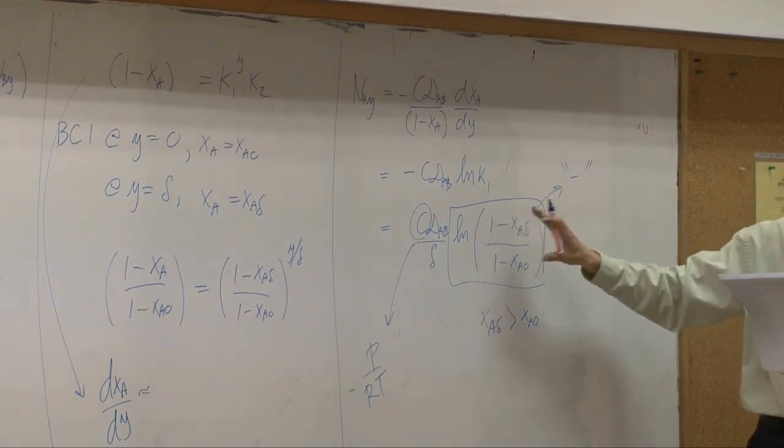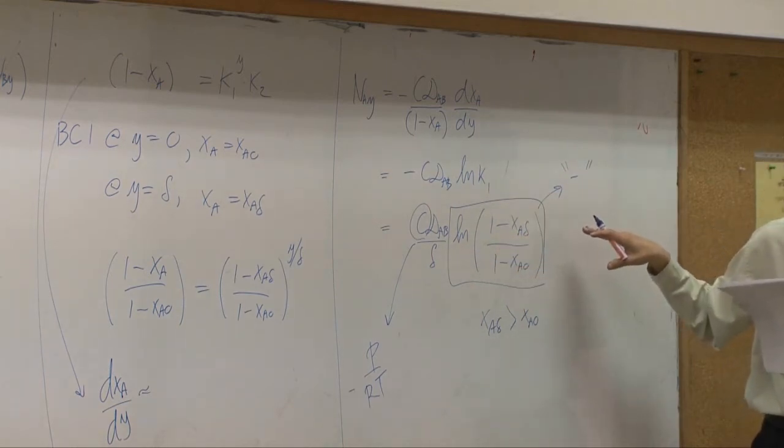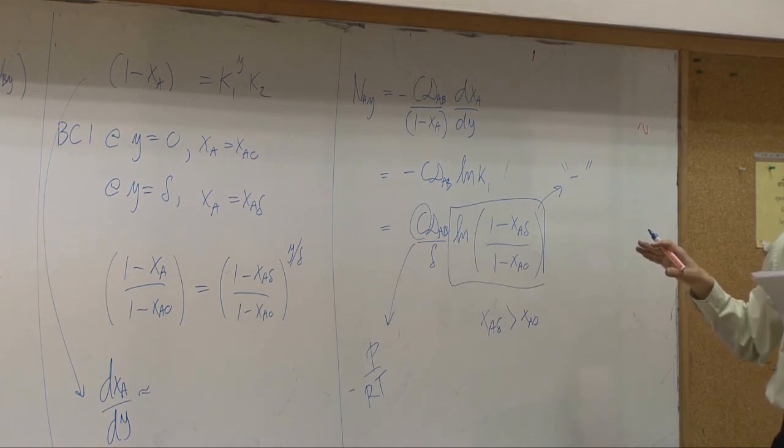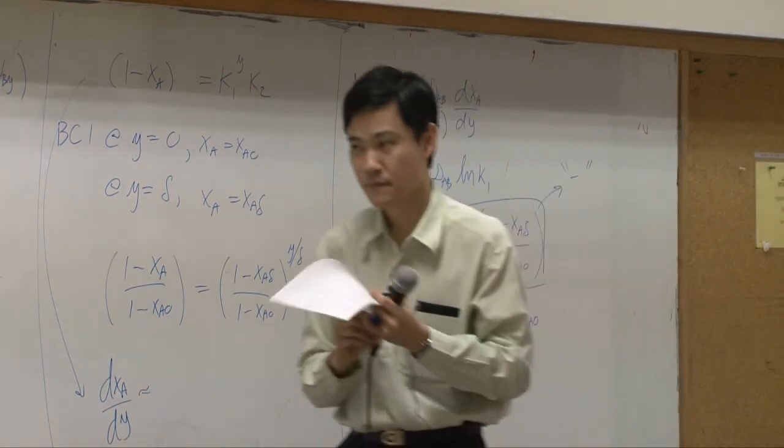It's also constant. So this amount that we calculate is just the condensation rate. This is called the rate of condensation.